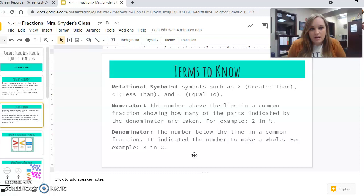And then the numerator. This is going to be the number above the line in a fraction, and it shows how many parts are going to be taken away from the denominator, or kind of colored in on the model. So, for example, this would be the number 2 whenever it comes to 2 thirds. Again, so that numerator is the top.